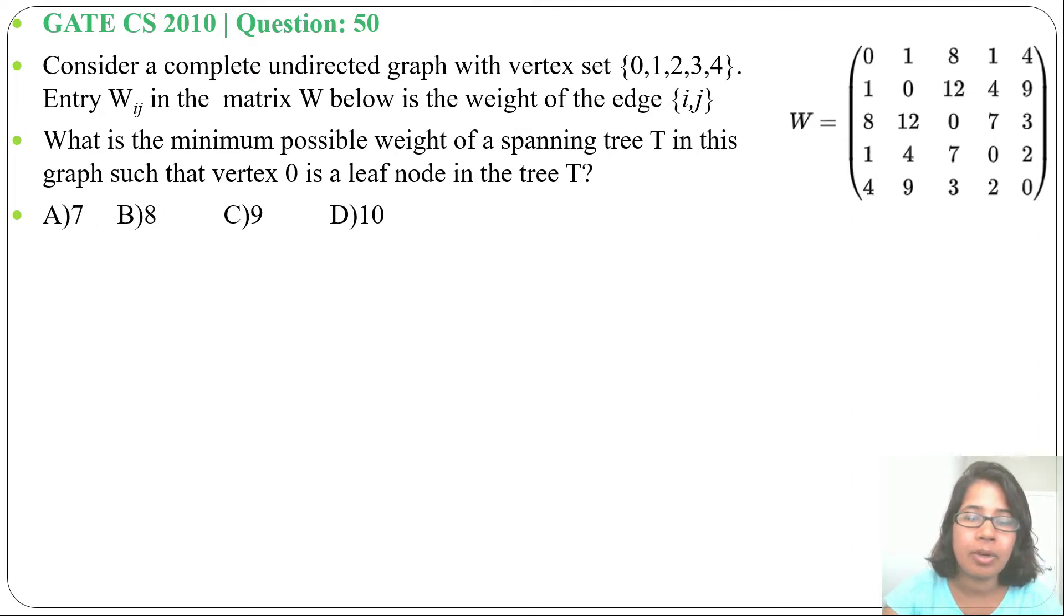Four options are given. So this is a weighted matrix. Let me write 0, 1, 2, 3, 4 - these are the vertices. If you are not understanding this weighted matrix, let me first create a graph from this weighted matrix.